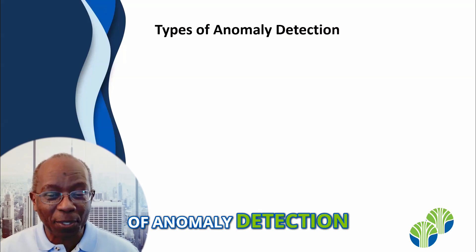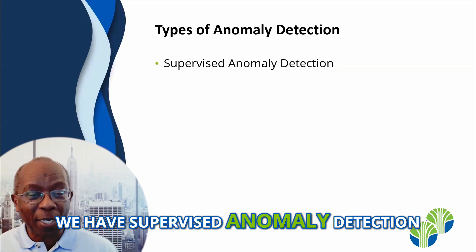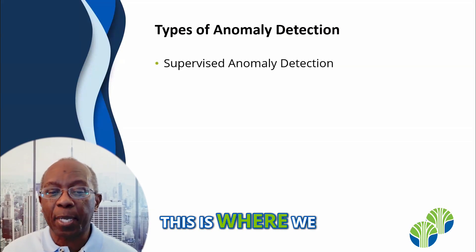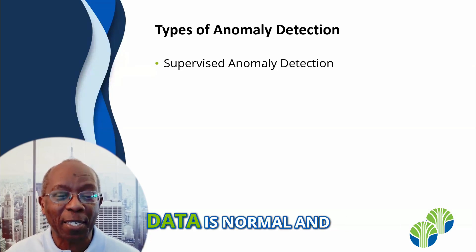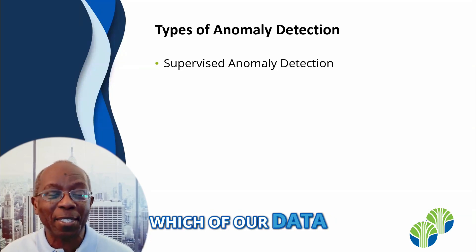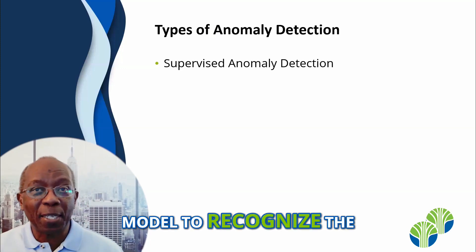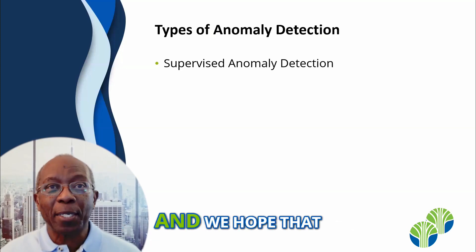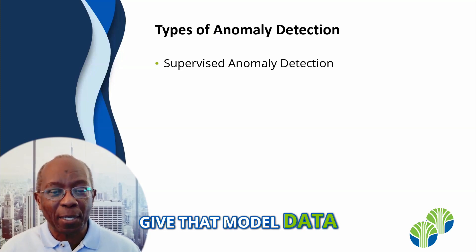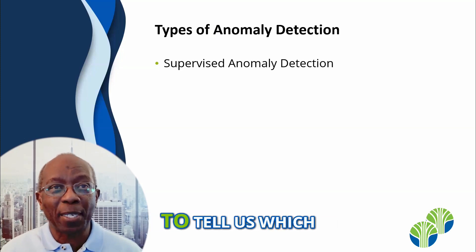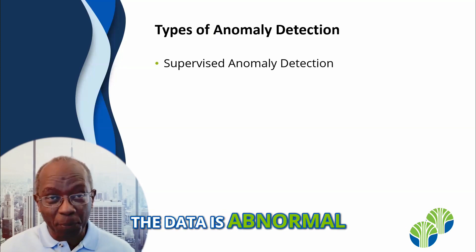What are the types of Anomaly Detection? We have supervised Anomaly Detection. This is where we first get humans to identify which of our data is normal and which is abnormal, and we train a model to recognize normal data. We hope that when we give that model data in production, it will be able to tell us which of the data is normal and which is abnormal.